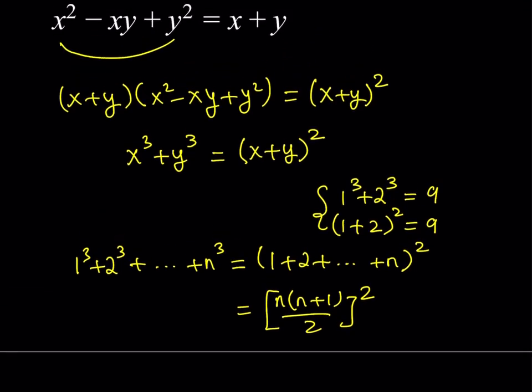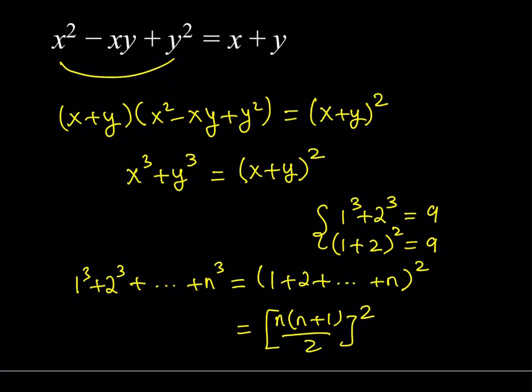This allows you to guess and check some solutions. In this case, 1 comma 2 is definitely a solution. But I want to look for all the solutions — I need a general approach. Can we take it from here and find a general approach?